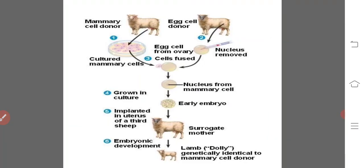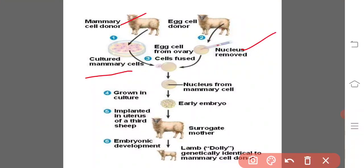In Dolly's creation: mammary cells were taken from the donor sheep, cultured mammary cells had their nucleus removed, and egg cells were taken from the ovary. The cells were fused, grown with the nucleus from the mammary cell, then grown in culture to form an early embryo. This embryo was implanted in the uterus of a surrogate mother sheep and embryonic development took place. The resultant lamb, Dolly, is genetically identical to the mammary cell donor.